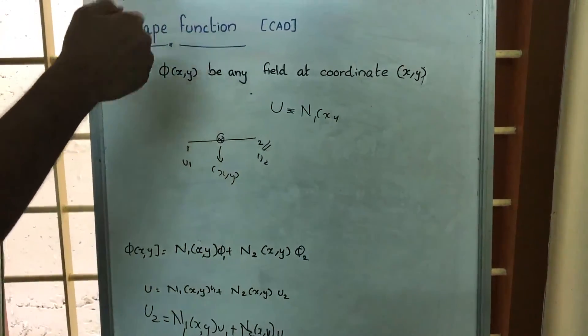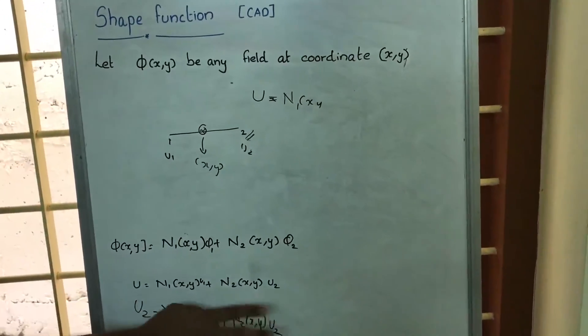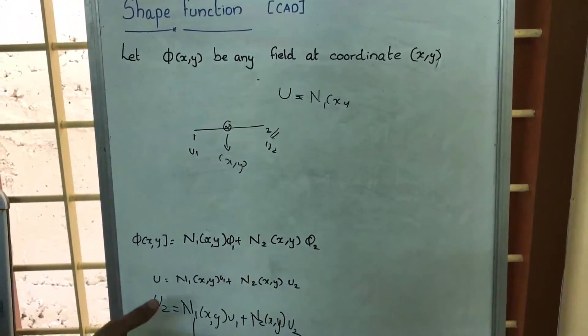Similarly, if you are taking node 1, at that node 1, this N2(x,y) will be 0 and N1(x,y) will be 1.